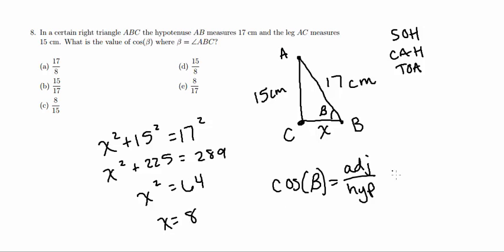So now we can plug these values in, and we know our adjacent side is going to be 8, and our hypotenuse is going to be 17, so this here is going to be our answer.